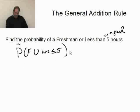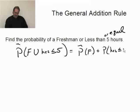I want the probability of a freshman plus the probability that hours is less than or equal to five. I need to subtract from that the probability of a freshman and hours less than or equal to five.